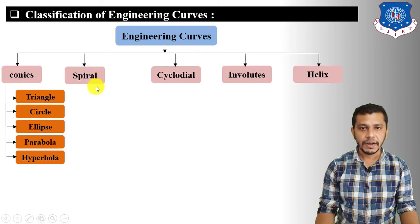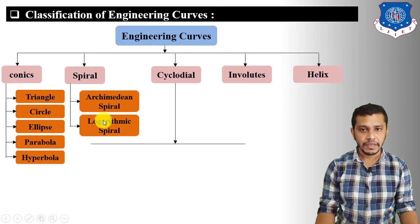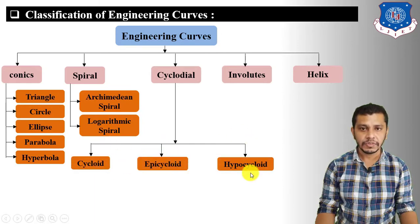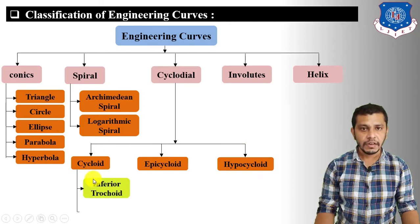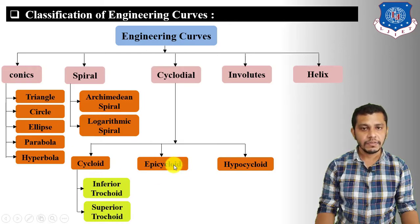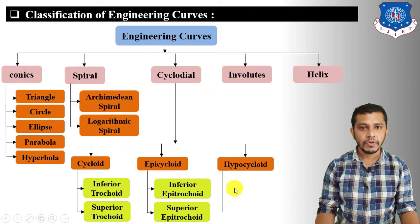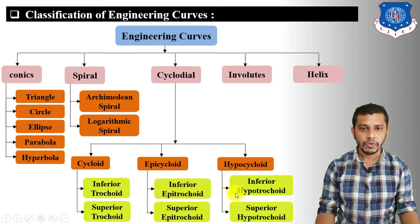Spirals are further classified into Archimedean spiral and logarithmic spiral. Cycloidal curves are further classified into cycloid, epicycloid, and hypocycloid. Cycloid is further classified into inferior trochoid and superior trochoid, while hypocycloid is further classified into inferior hypotrochoid and superior hypotrochoid.